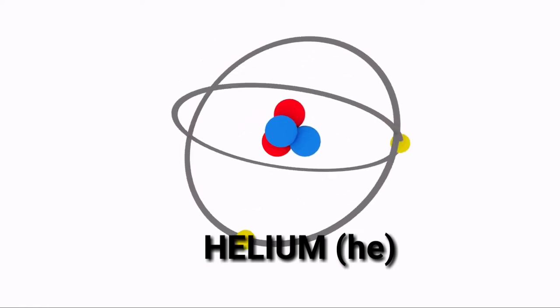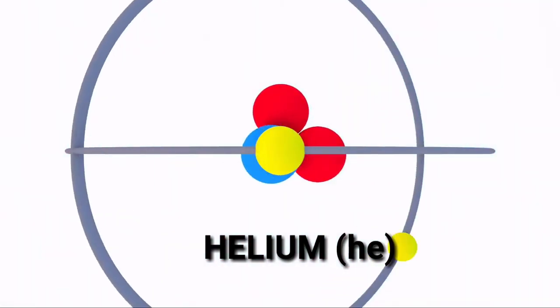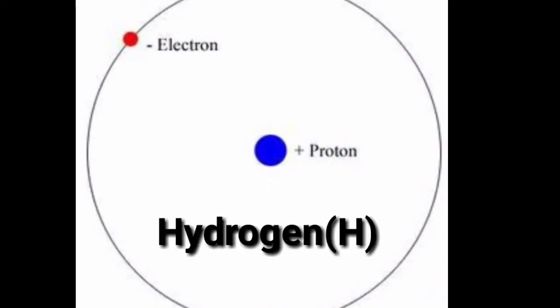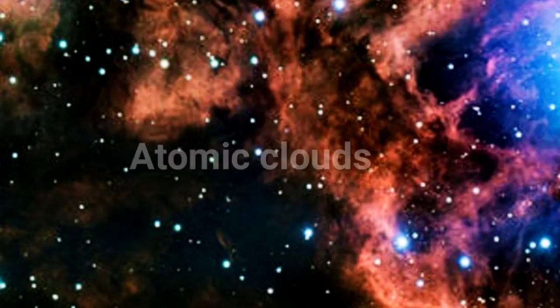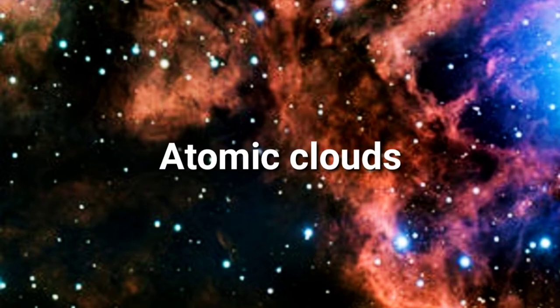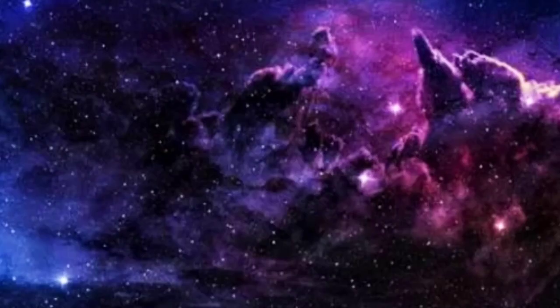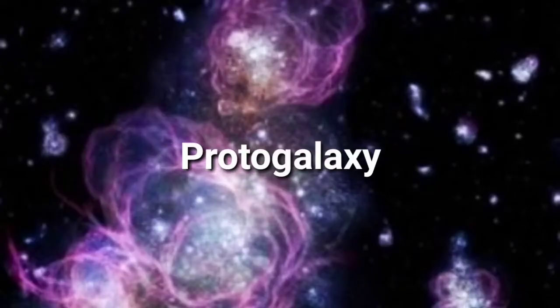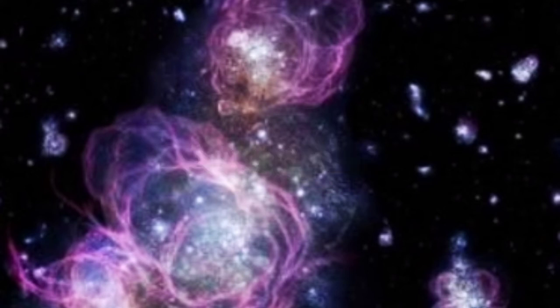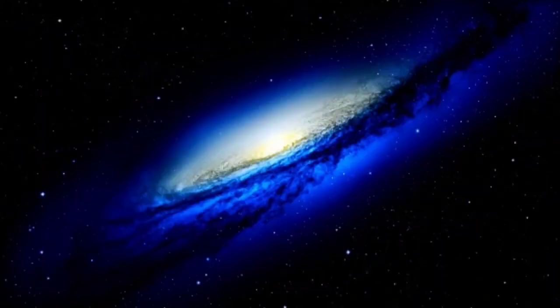The neutrons decayed into protons, forming the first atom, helium. The universe cooled further for electrons to attach to nuclei for the first time, forming the second atom, hydrogen. Helium and hydrogen together formed atomic clouds, and pockets of gas inside an atomic cloud had enough gravity to attract atoms, forming proto-galaxies, which then formed the galaxies.